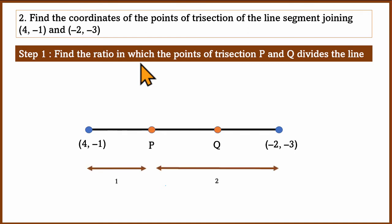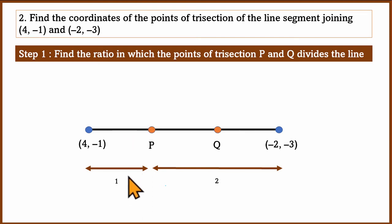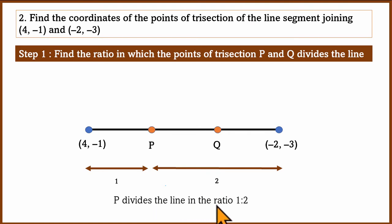What is the ratio? For point P, the left portion is 1 unit and the right portion is 2 units, since there are 3 equal sections. So P divides the line in the ratio 1:2.